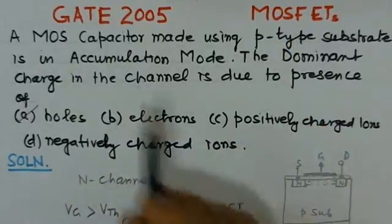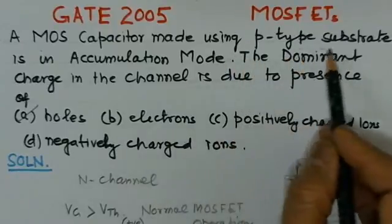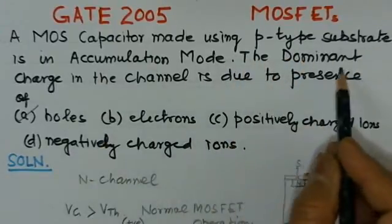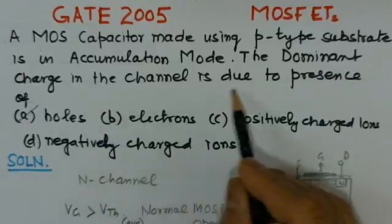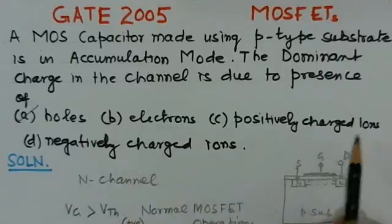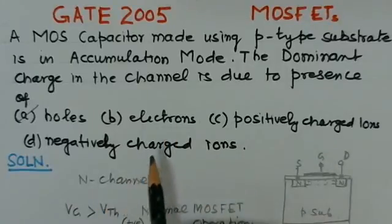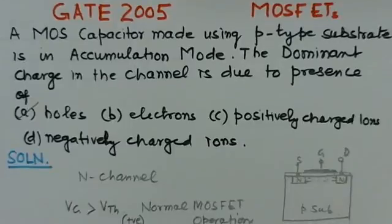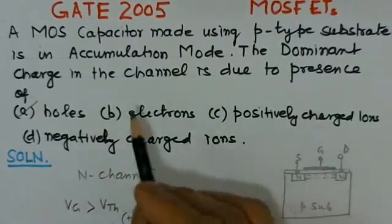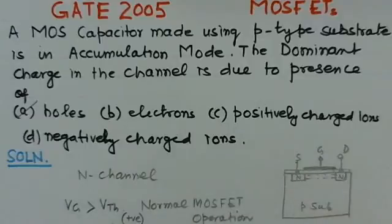A MOS capacitor made using p-type substrate is in accumulation mode. The dominant charge in the channel is due to presence of: (a) holes, (b) electrons, (c) positively charged ions, (d) negatively charged ions. So this is the problem—the MOSFET is in accumulation mode and the channel would be formed of which type of carriers we have to find out.